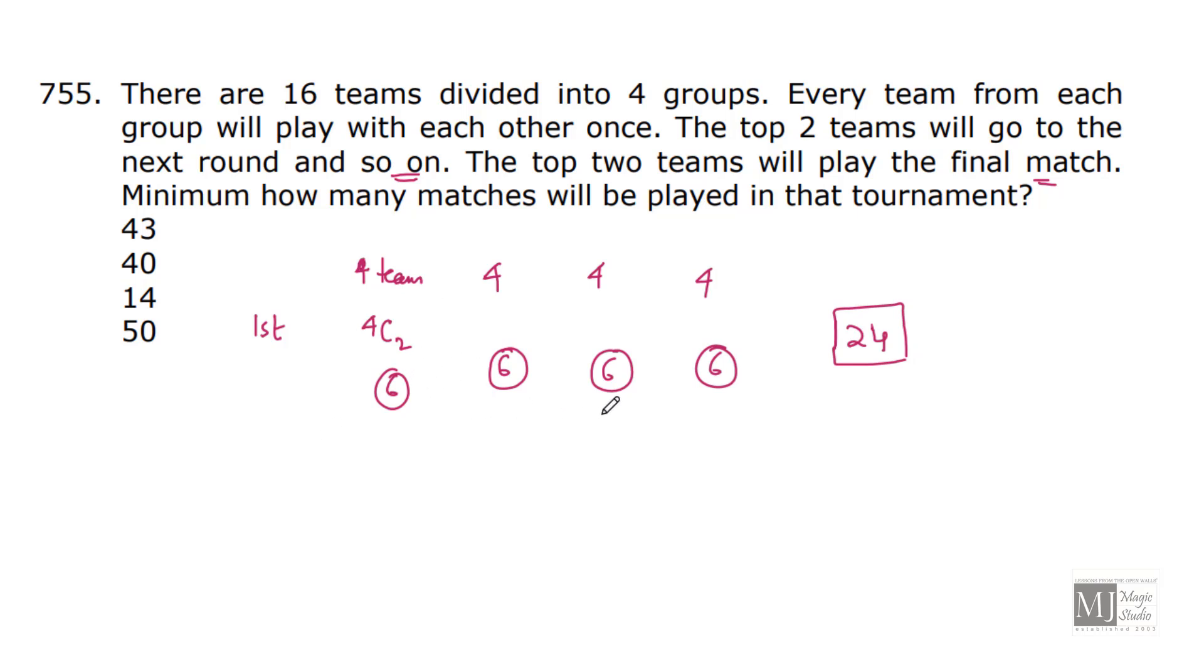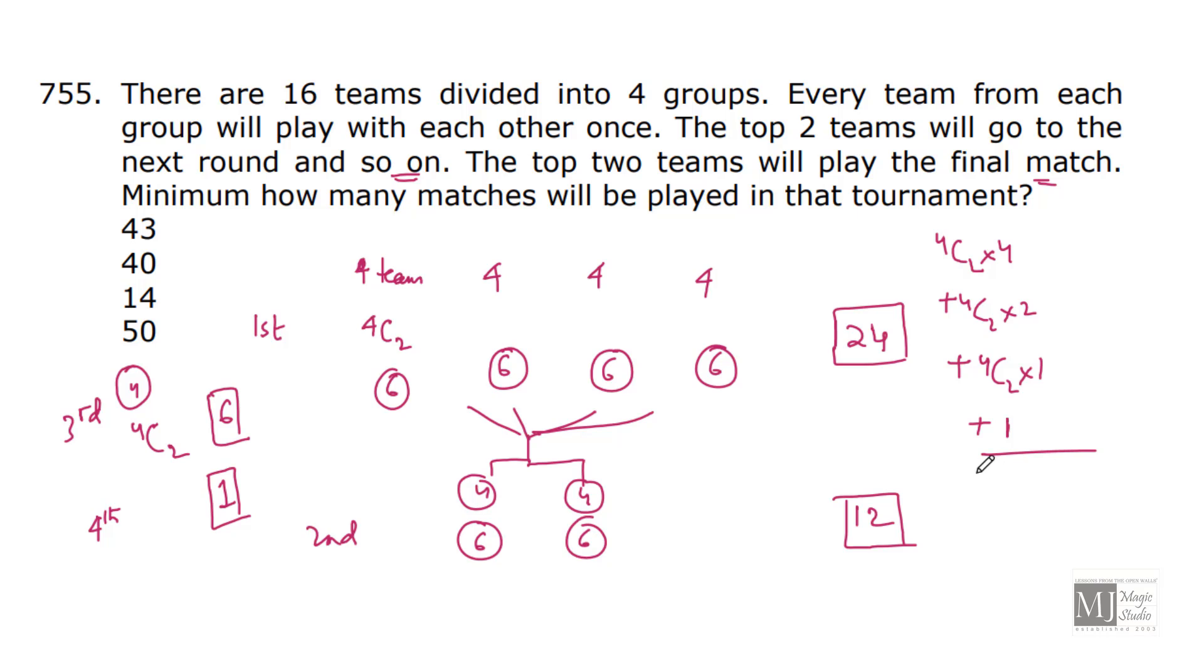Now, in second round, I have 2 winners from each group. That means, 8 people. These 8 people would be converted into 2 groups now of 4 and 4. So, in the second round again, 6 matches from this group and 6 matches from this group. We will have 12 more matches. Now, we have 4 winners. In third round, these 4 would be playing 4C2 matches again. That means, 6 more matches. Now, in fourth round, only 2 teams will move forward. And they would be playing the final. So, total number of matches are 4C2 × 4 for round 1, plus 4C2 × 2 for round 2, plus 4C2 × 1 for round 3, plus 1 for round 4. That gives us 24 + 12 + 6 + 1 = 43 minimum number of matches.